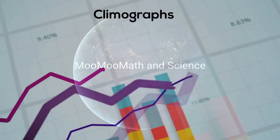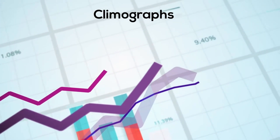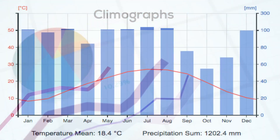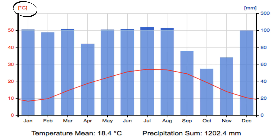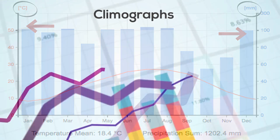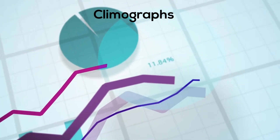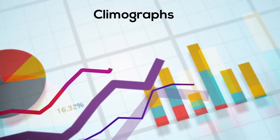Welcome to Moomoo Math and Science and Climographs. A climograph is a graph in which temperature and precipitation are both represented on the same graph. In these examples, the temperature is on the left in Celsius, and the precipitation is represented by a bar graph on the right in millimeters. I'd like to take a look at a couple of the major biomes and see what their climographs look like.